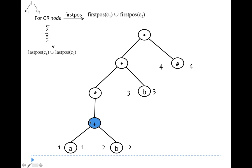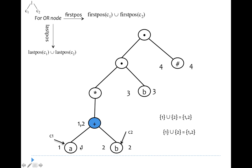Now the first and last position of the OR node. The OR node has two child nodes c1 and c2, where child 1 is a and child 2 is b. First position of OR is computed as firstpos(c1) ∪ firstpos(c2) = {1} ∪ {2} = {1, 2}. Similarly, last position of OR is lastpos(c1) ∪ lastpos(c2) = {1} ∪ {2} = {1, 2}.